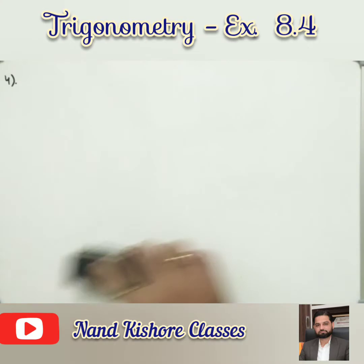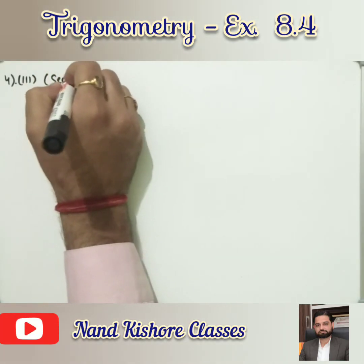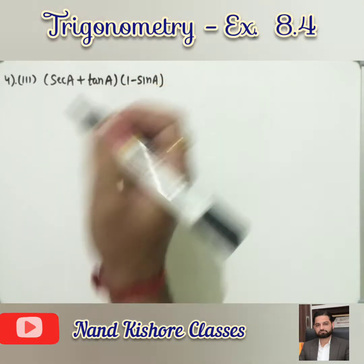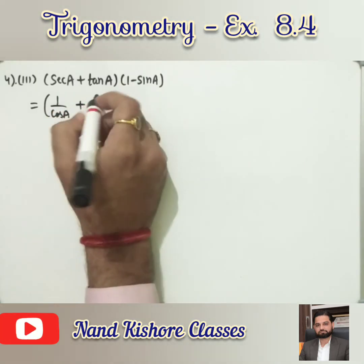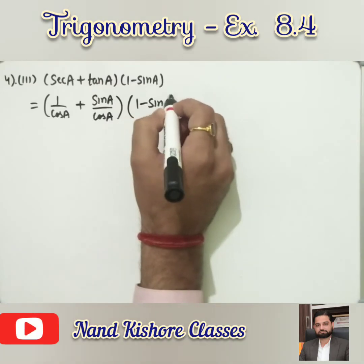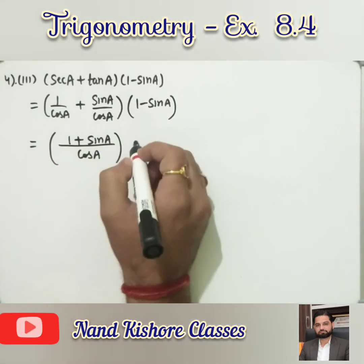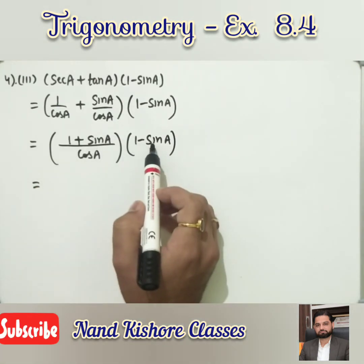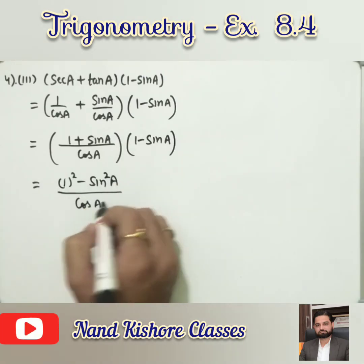Now part 3: (secA + tanA)(1 − sinA). What will we do? secA = 1/cosA, tanA = sinA/cosA, and (1 − sinA) as it is. In the bracket, cosA is the LCM, so we get (1 + sinA)/cosA, then multiplied by (1 − sinA). This gives (1 + sinA)(1 − sinA)/cosA, which is (a+b)(a−b) = a²−b².